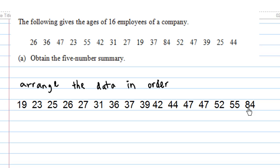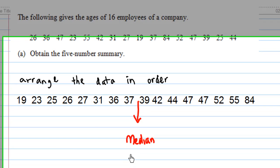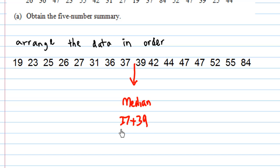Once I have obtained this in order, I will be able to find the median. There are altogether 16 numbers, so the median is on the 8th and 9th numbers. The middle between the 8th and 9th number will be the median. 37 plus 39 divided by 2, you get 38. This number is called Q2.